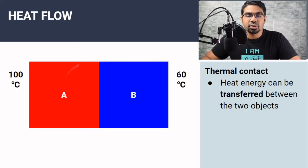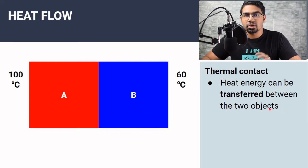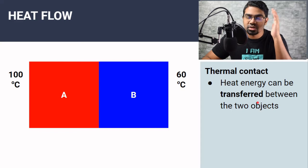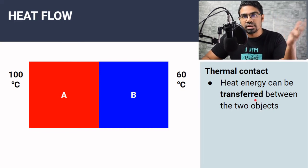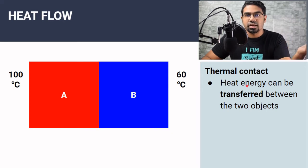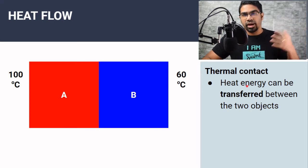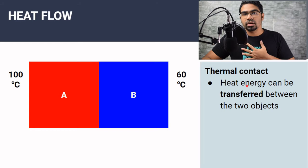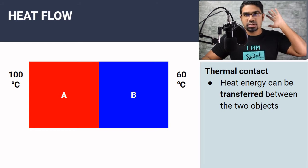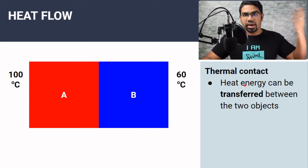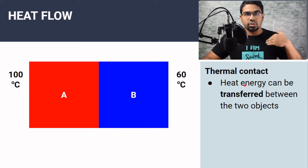When two objects are in thermal contact — thermal contact means that heat can flow between the two objects, and this is not to be confused with physical contact. It can be solids and solids, solids and liquids, solids and gas — any phase with any phase. For example, I am in thermal contact with the air surrounding me because heat energy can flow from me to the air and from the air into me.